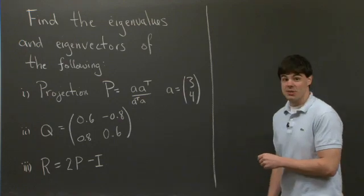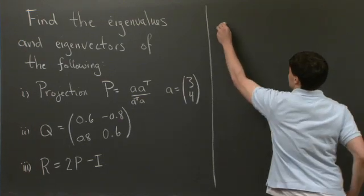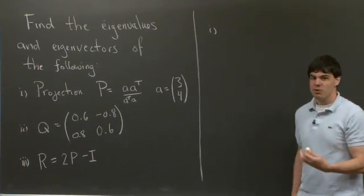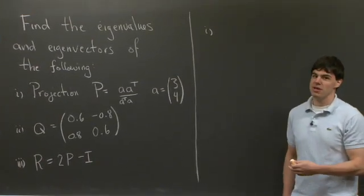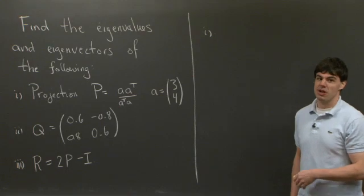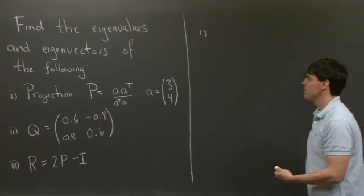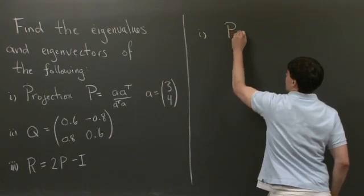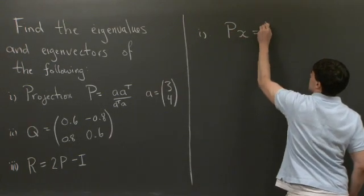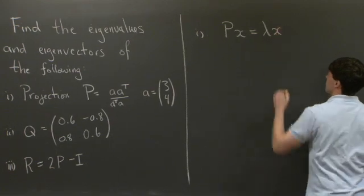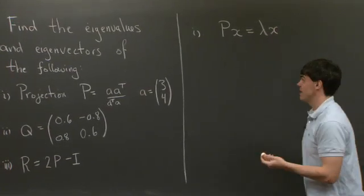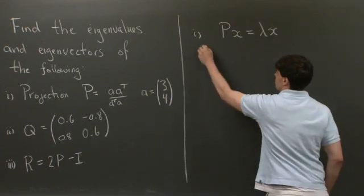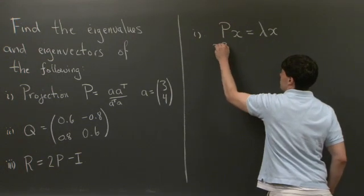Welcome back. For the first problem, we're given a matrix P, which is a projection matrix. From earlier in the course, we already know that the eigenvalues of a projection matrix are either 0 or 1. If x is an eigenvector of P, then it satisfies Px equals lambda x. But for a projection matrix, P squared equals P.